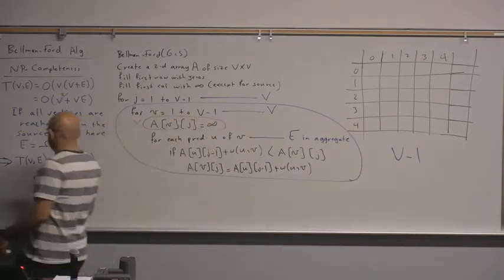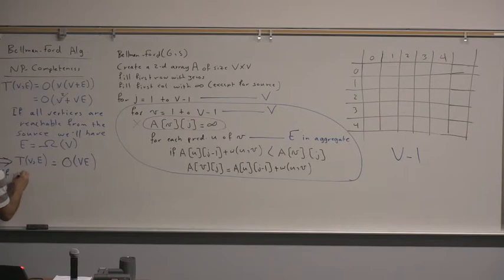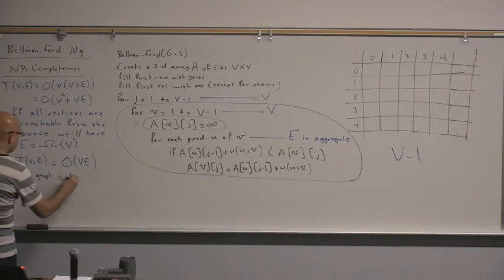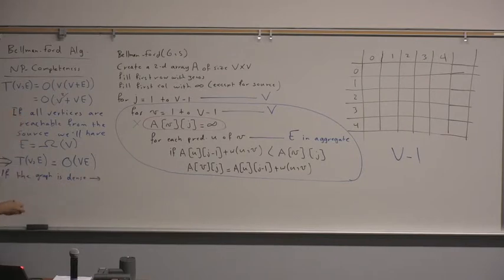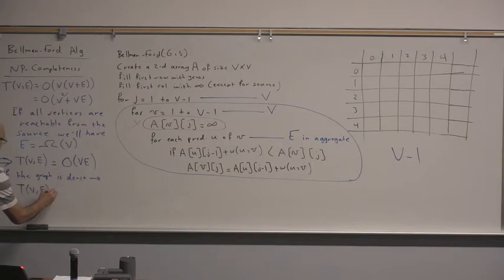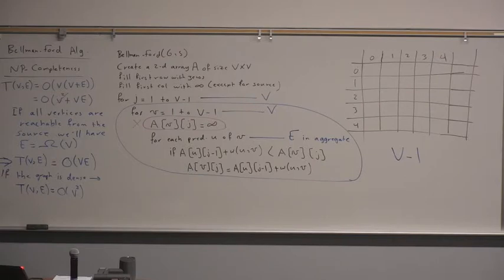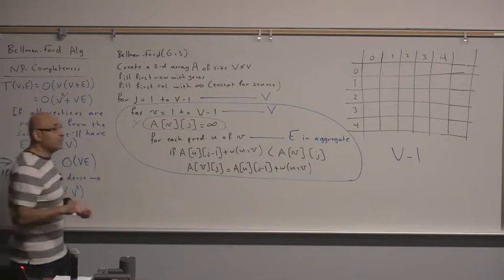If the graph is dense, then E is Θ(V²), so T(V,E) = O(V·V²) = O(V³). For a dense graph, the Bellman-Ford algorithm is an O(V³) algorithm.